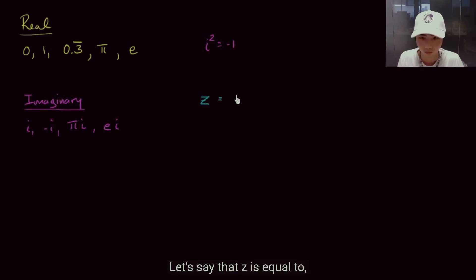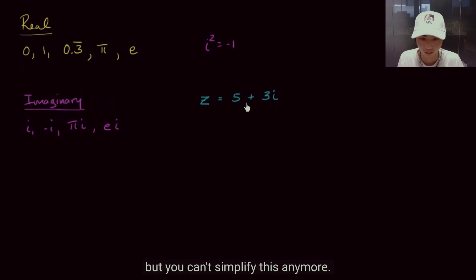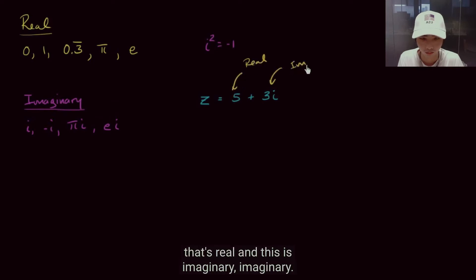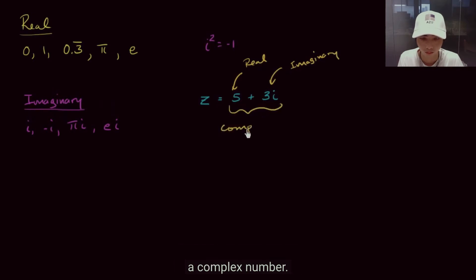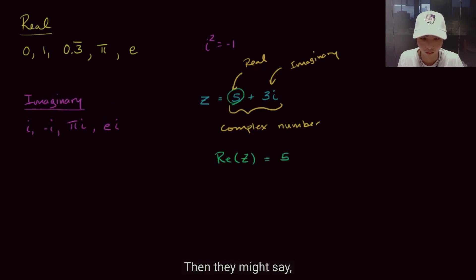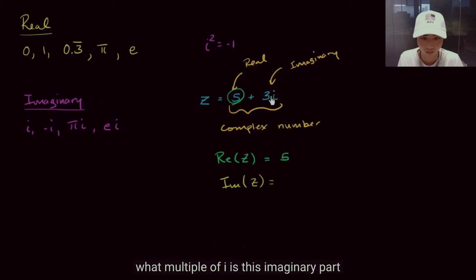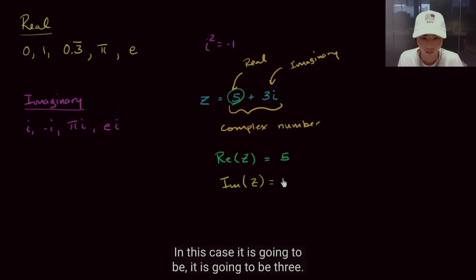What if I had numbers that were sums or differences of real and imaginary numbers? For example, let's say z equals 5 plus 3i. We have a real number plus an imaginary number. You can't add these two things together — they can't be simplified further. A number like this, with a real part and an imaginary part, we call a complex number. The real part of z is 5, and the imaginary part — meaning what multiple of i — is 3.